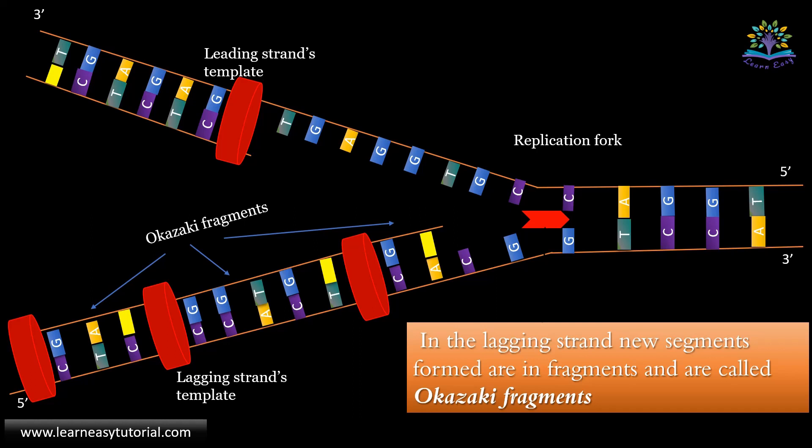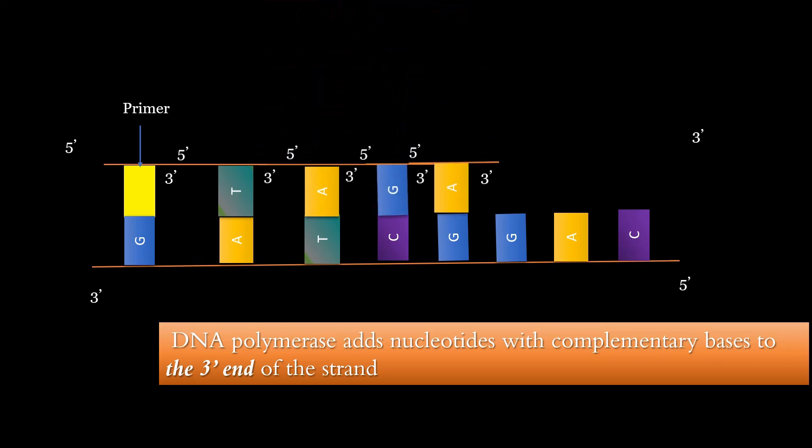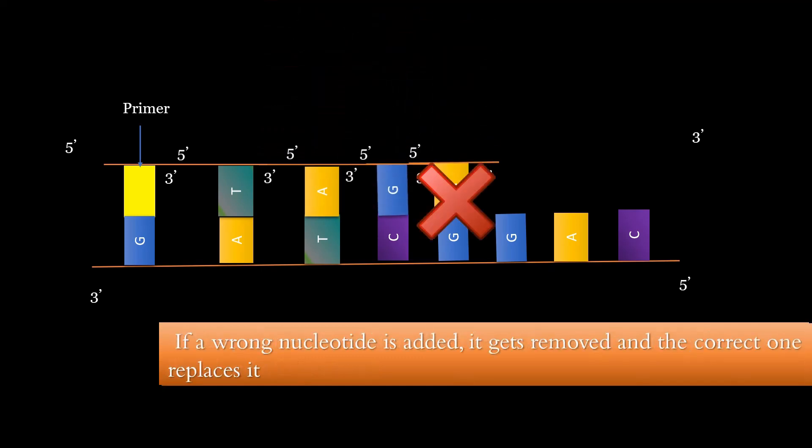DNA polymerase adds the nucleotides with complementary bases to the three prime end of the strand. In addition, they also do error checking. If a wrong nucleotide is added, it gets removed and the correct one replaces it. Please note that this enzyme can't initiate the process but can only extend or elongate an existing strand, and hence the primer is needed.